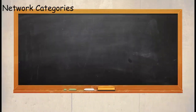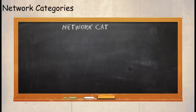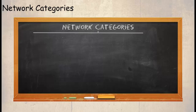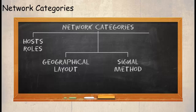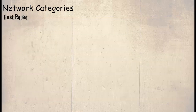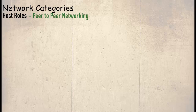Networks fall into certain categories such as roles played by the hosts, the geographical distance between them, the signal method used to communicate, and their participation. When categorizing by host roles, there are two main types. The first is called peer-to-peer networking.